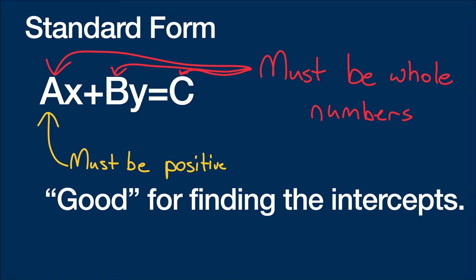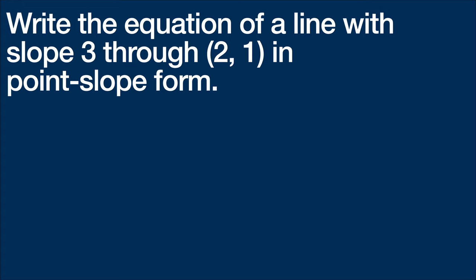So now let's try out a couple of these. We're going to write the equation of a line with a slope of 3 through (2, 1) in point-slope form. So to start with, I'm going to say that my point is (2, 1), this is x1 and this is y1. So we have y minus y1 equals my slope of 3 times x minus my x1, which is 2. And that's how we do that.